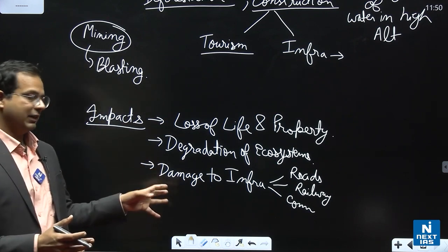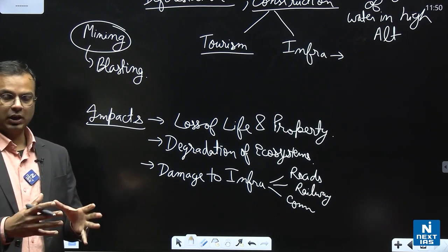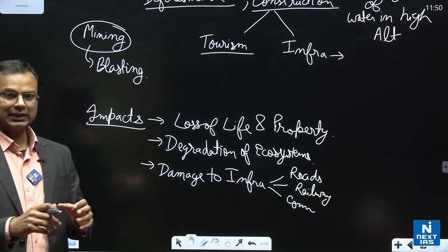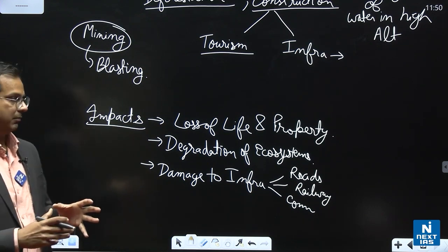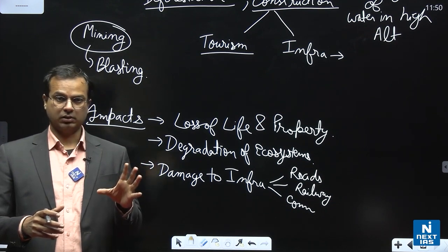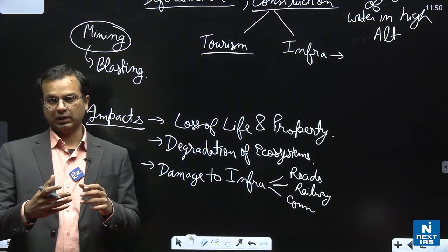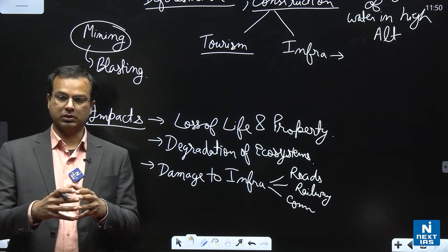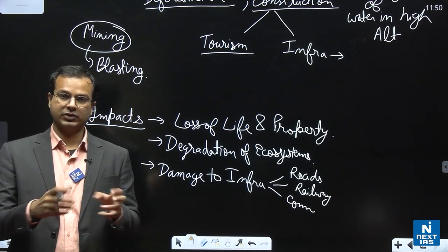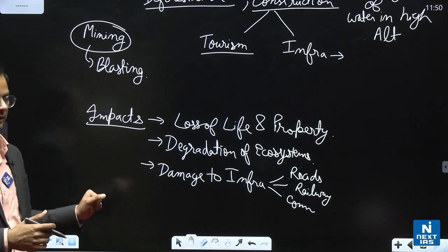Other impacts of the landslide can be migration, out-migration of people from landslide prone areas. So this can increase stress in the cities. There can be social impacts also. For example, in the 2015 Nepal earthquakes, we saw that after the earthquakes there was a huge rise in the cases of trafficking, kidnapping and trafficking of children and women. So social impacts of landslides or such disasters can be there in the hilly areas.